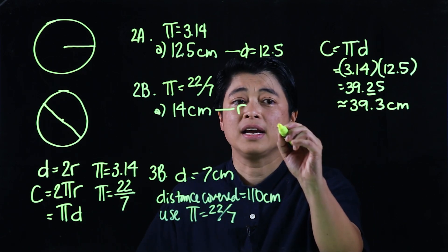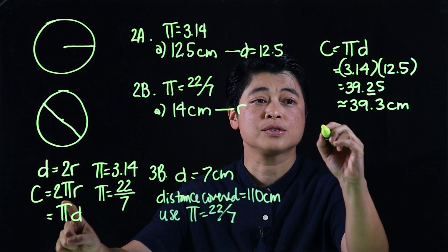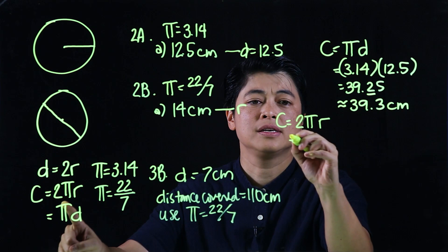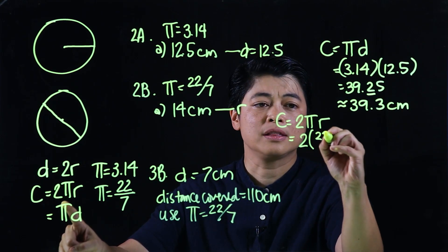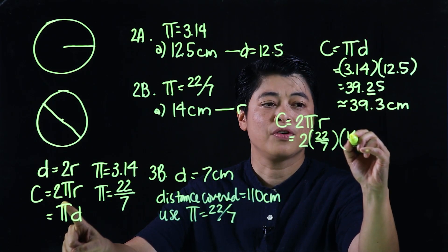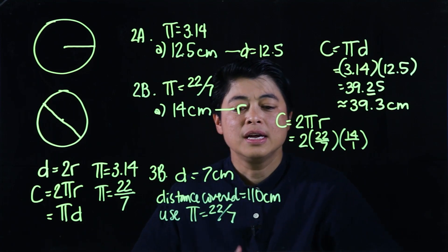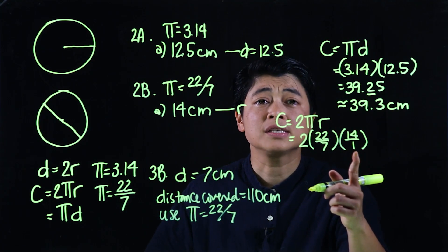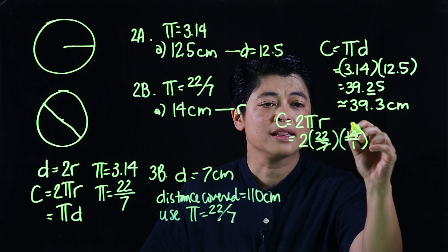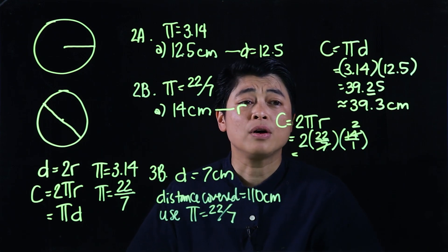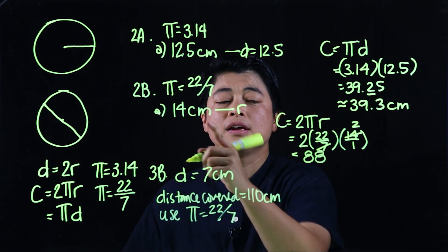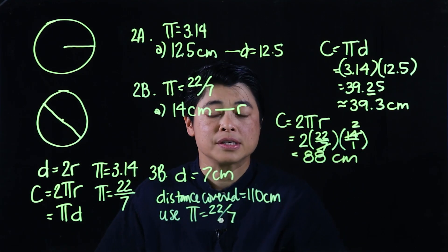The formula I will use is C=2πr. So 2×22/7×14/1. We know that all whole numbers can be written as fractions. So here we cancel, that becomes 2. When we multiply all of those together, that should give us 88 centimeters.